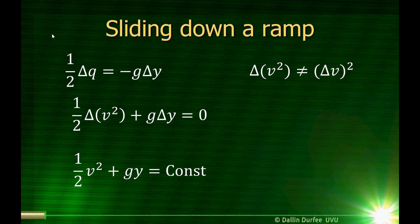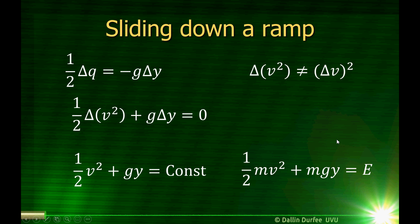So that tells us that one-half v squared plus g y must equal a constant. If their changes add to zero, then when I add those two things together, I must get a constant. If I multiply both sides by m, I get this equation: one-half mv squared plus mgy is equal to a constant, and we'll call that constant E. The reason we multiplied by m was because the things we get here can be applied to other problems as well, and they're more useful in this form.